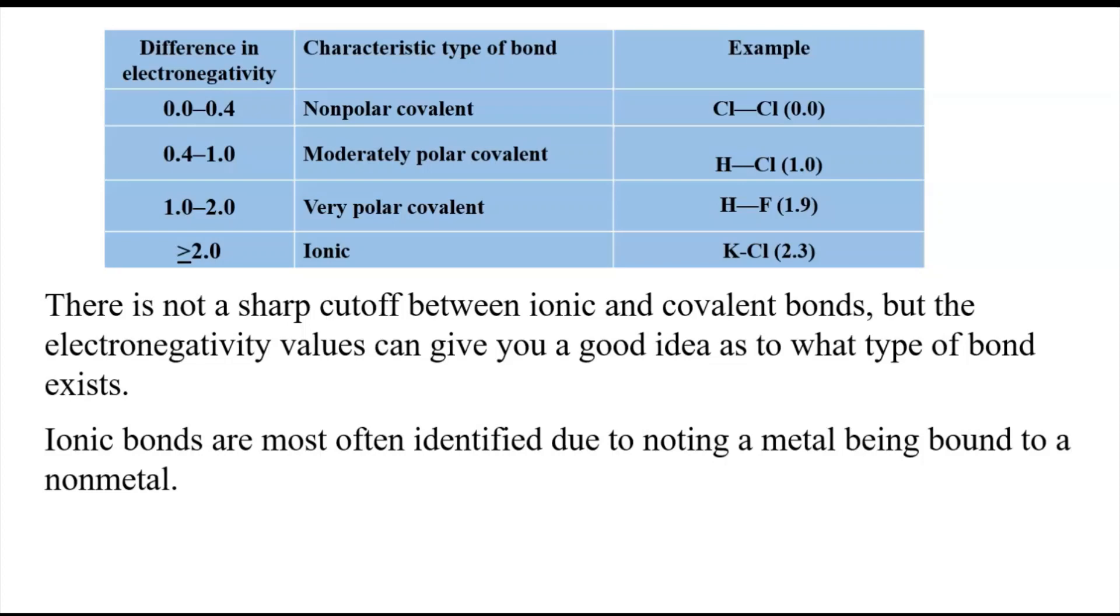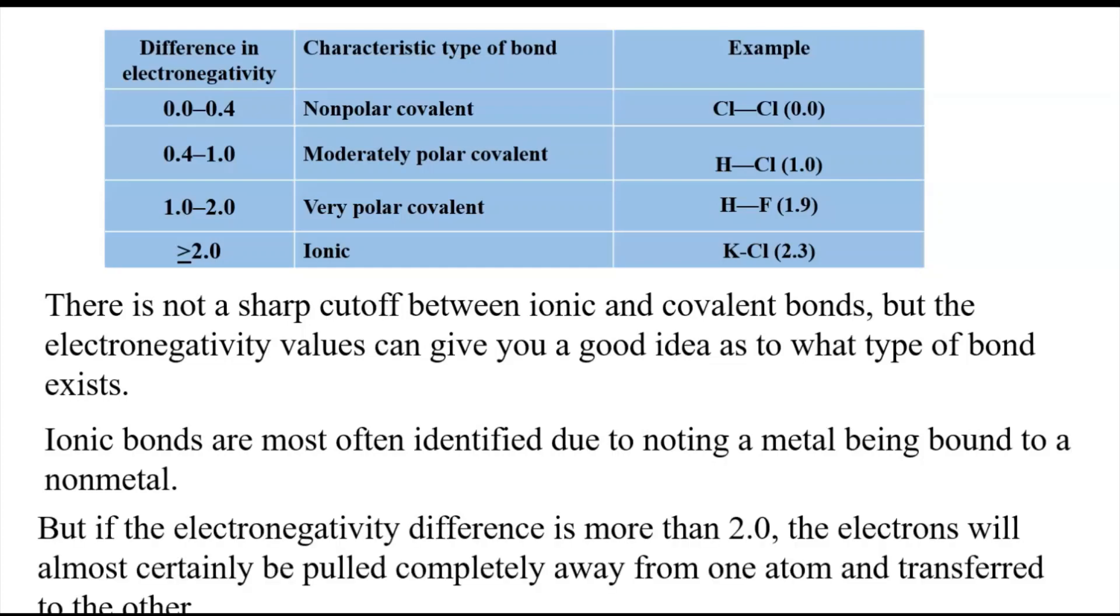In practice, we often will just, if we can identify a metal and a non-metal, that's usually a pretty good indication of an ionic bond. But if the electronegativity difference is more than about 2.0, the electrons are almost certainly going to be stripped off of one atom and then transferred to the other.